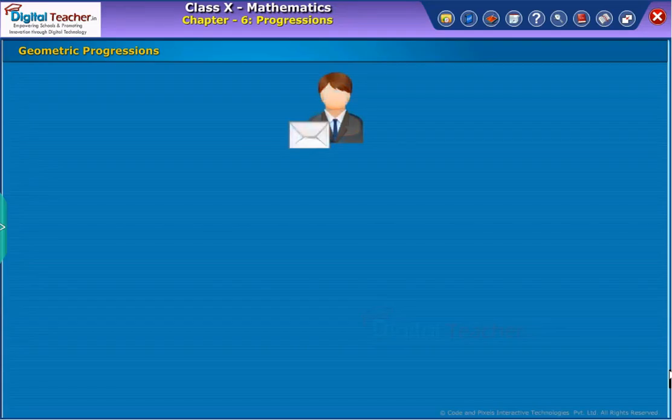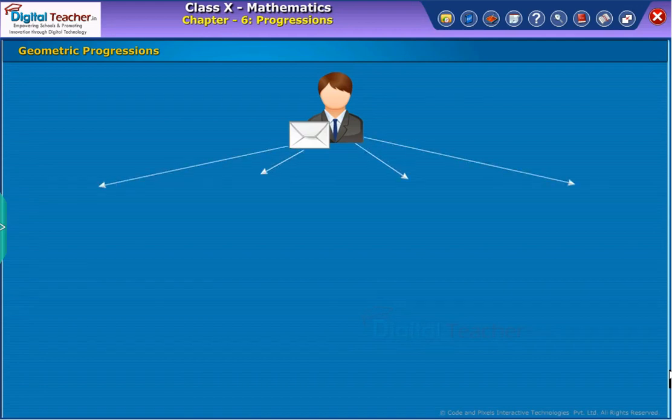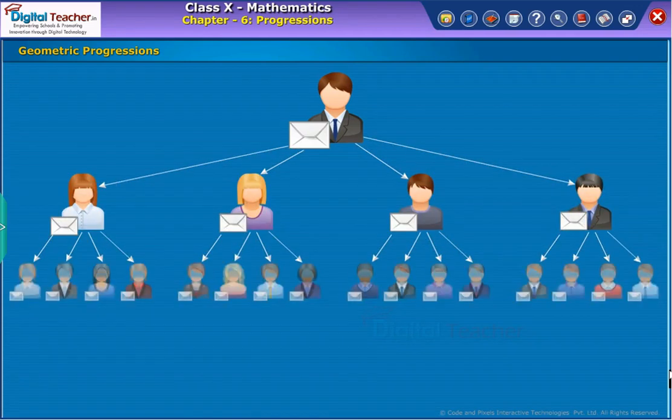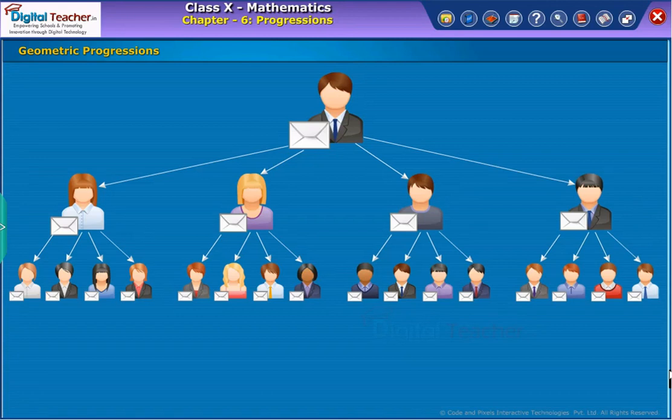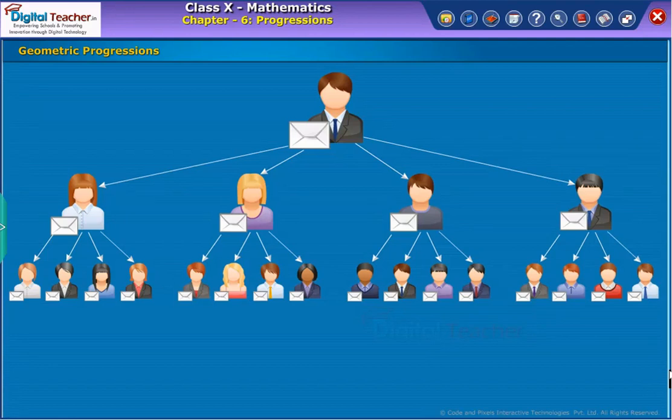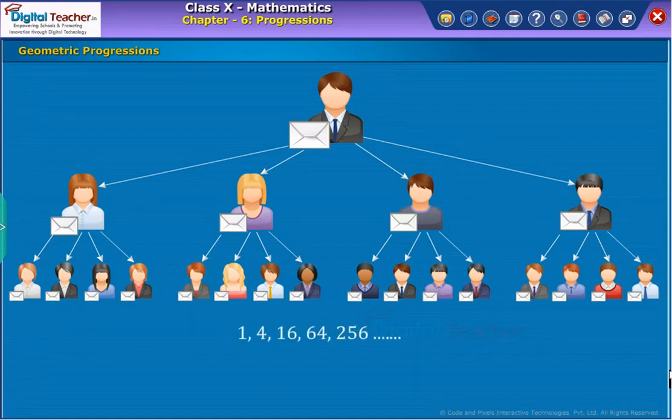Some more examples of GP are: Vinay writes a letter to four of his friends. He asks each one of them to copy the letter and give it to four different persons with same instructions, so that they can move the chain ahead similarly. Assuming that the chain is not broken, the number of letters at first, second, third stages are 1, 4, 16, 64, 256, so on respectively. And the list of numbers are in GP, since each successive term is obtained by multiplying the preceding term by the number 4.